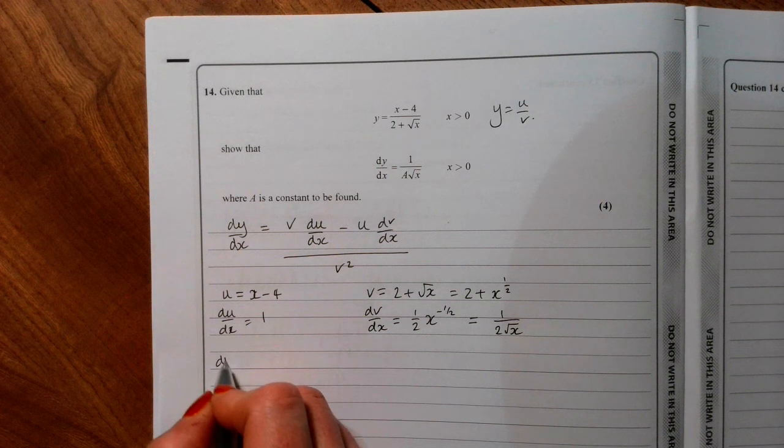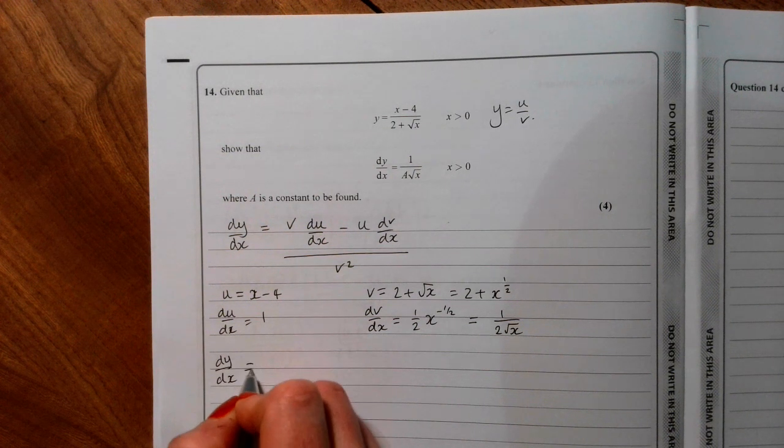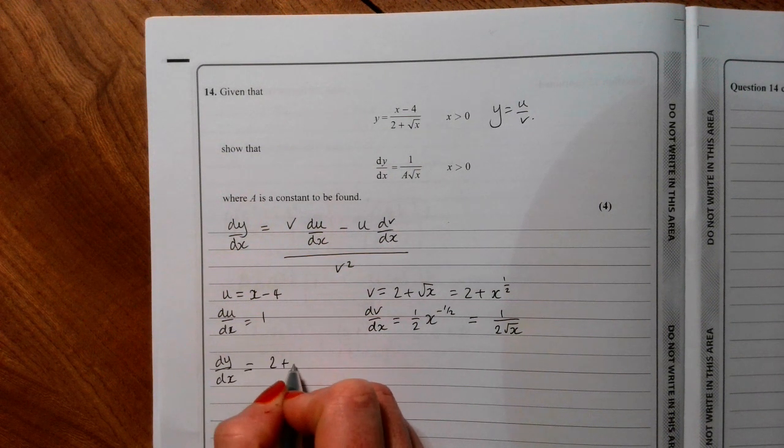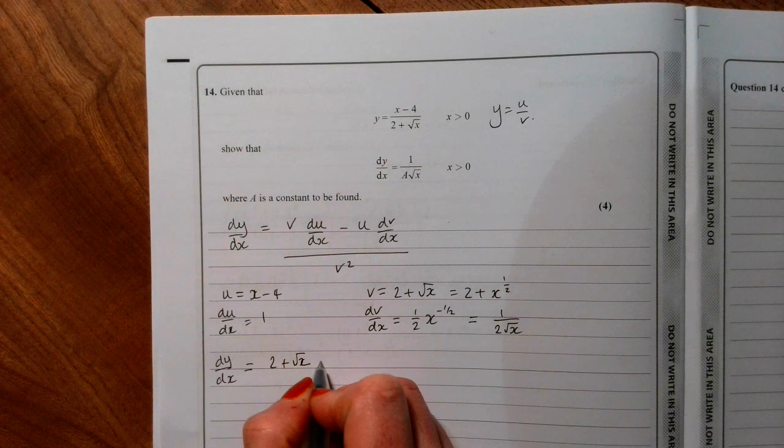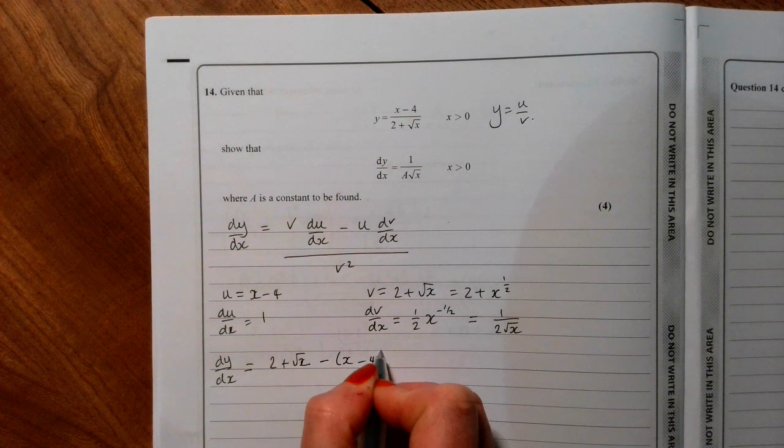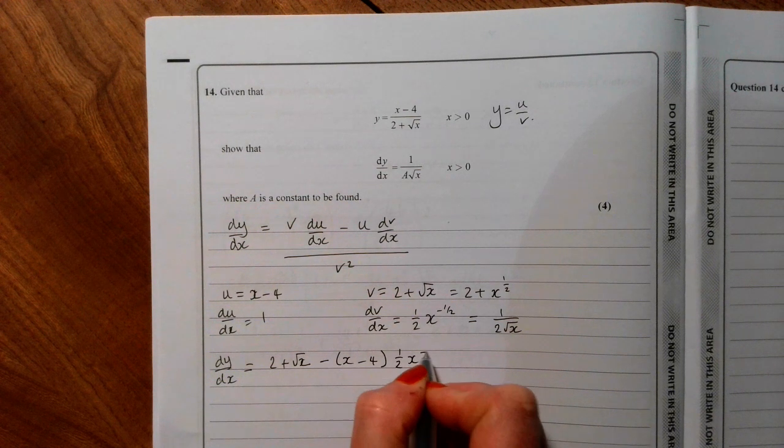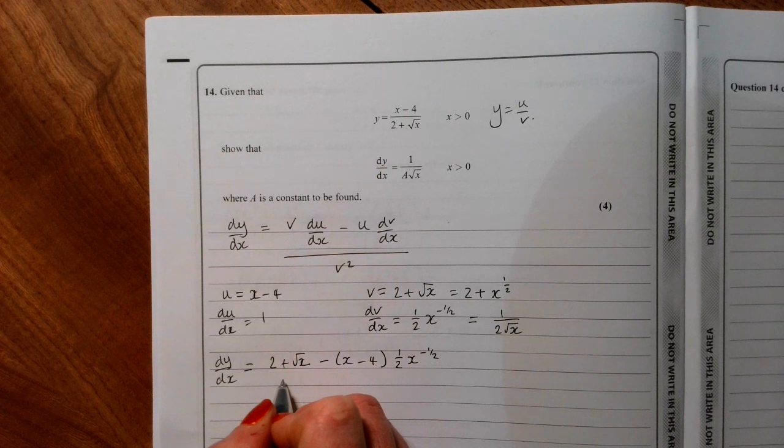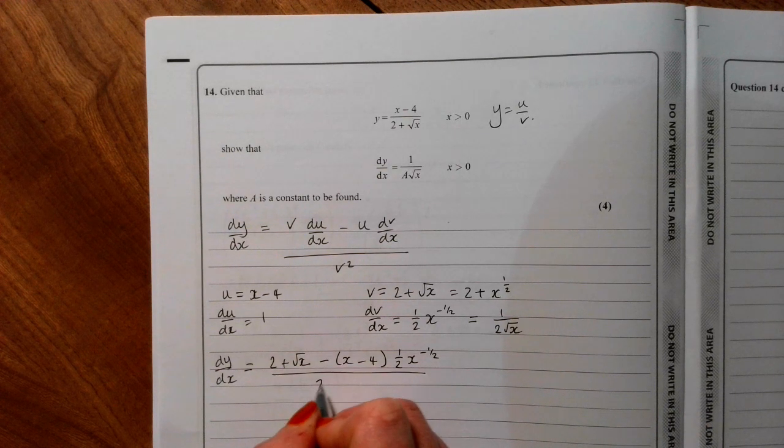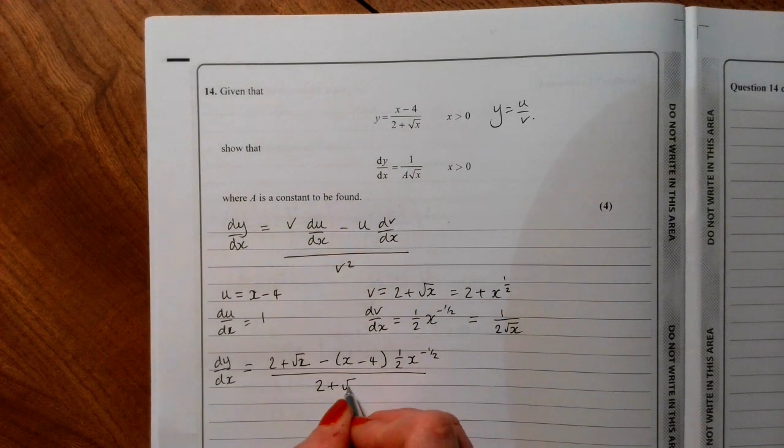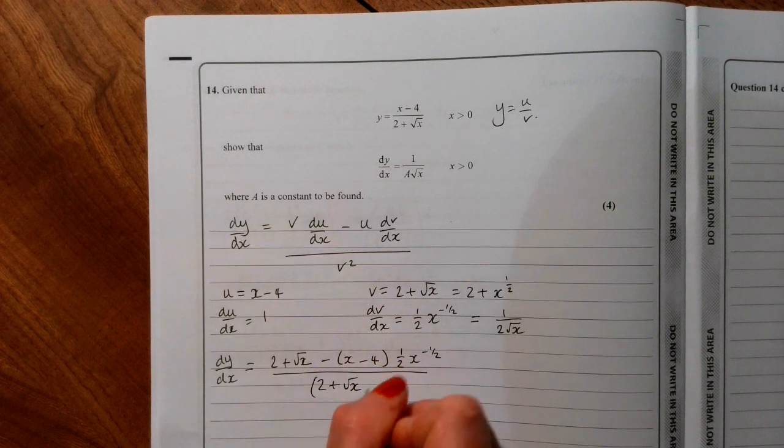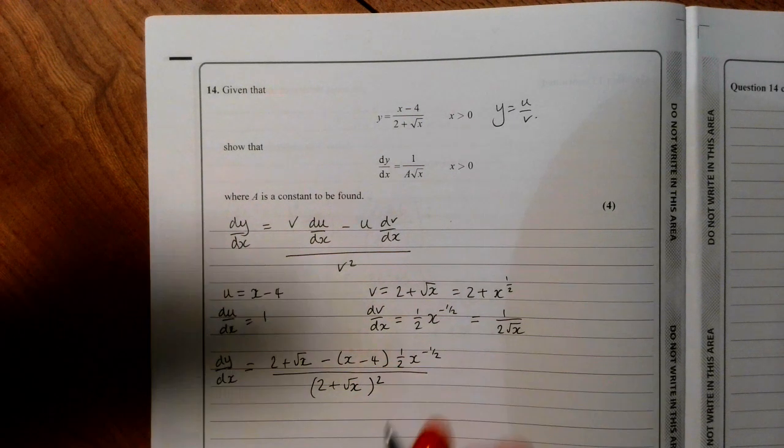Let's substitute it into our quotient rule. dy by dx is 2 plus root x minus x minus 4, 1 half x to the minus 1 half, all over 2 plus root x all squared.